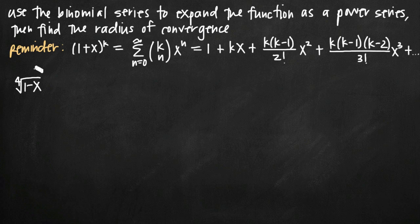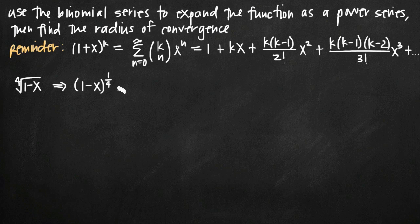The problem we're going to be doing in this video is the fourth root of 1 minus x. We can rewrite this function as the quantity 1 minus x raised to the 1/4 power. The reason we want to rewrite it that way is because it makes it look a lot more similar to the form of the binomial series — the quantity 1 plus x raised to the k.